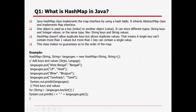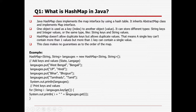For example, suppose we want to store state and language values. The state for the country will be unique, but the language can be duplicate — West Bengal's language can be Bengali, and similarly Tripura's language can also be Bengali. To print all keys and values, use the keySet method, then retrieve the key and corresponding values.